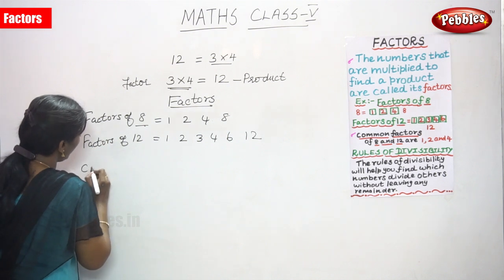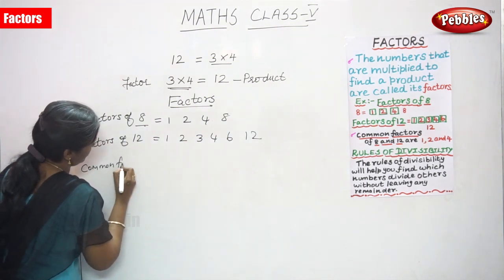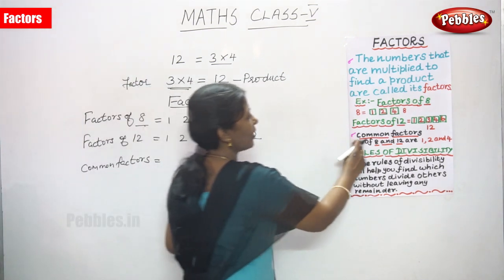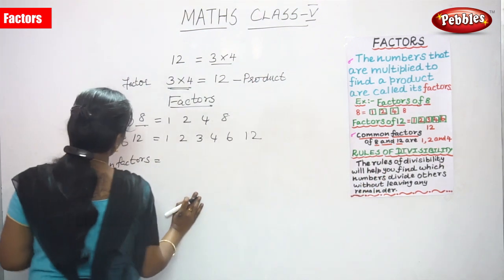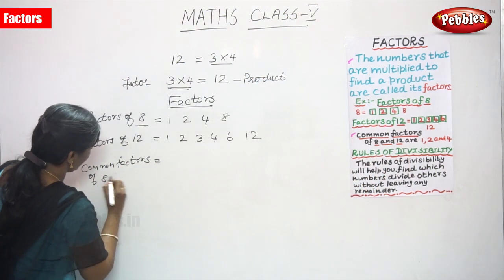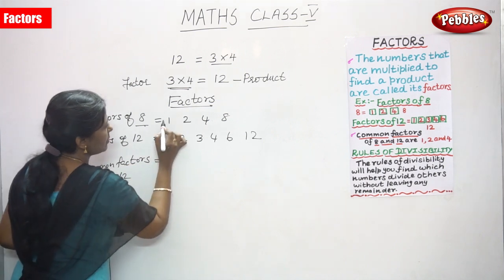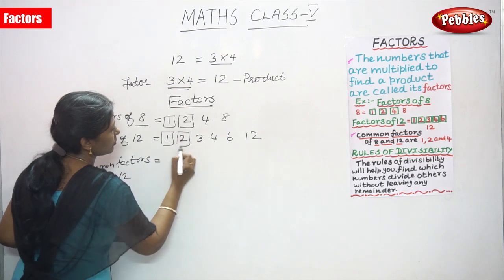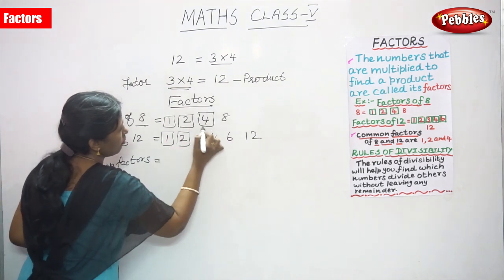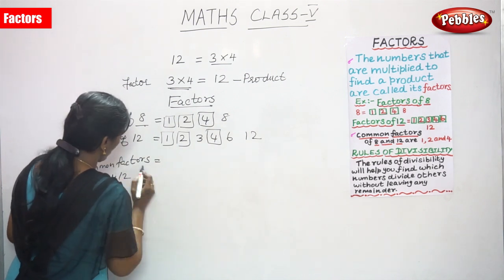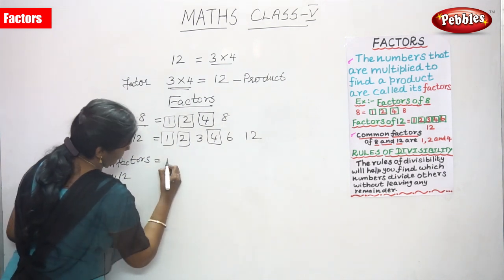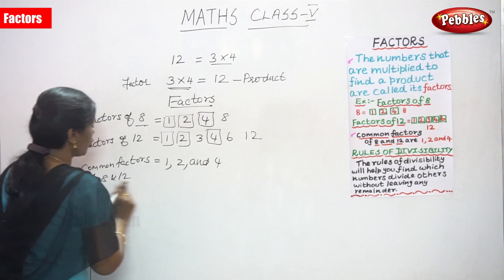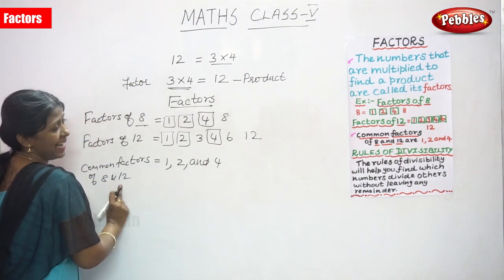We have to write the common factors. What are common factors? Common factors of 8 and 12 are: 1 and 2 appear in both numbers, then 4. So these are called the common factors of 8 and 12. The common factors of 8 and 12 are 1, 2, and 4.